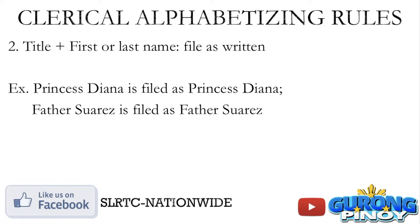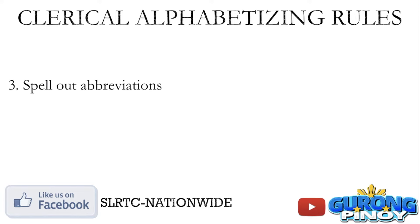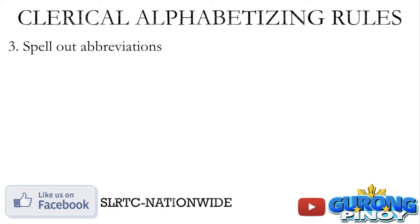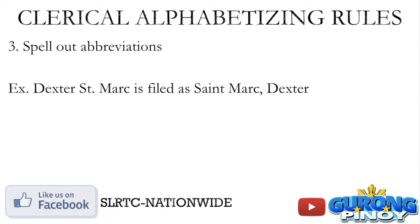Rule number three: spell out abbreviations. Pag meron pong abbreviations — yung mga dinaglat na mga terms or pangalan — you need to spell them out. For example, you have Dexter St. Mark. This should be filed as St. Mark, Dexter. Kung inyo pong napapansin, nauuna pa rin ang ating last name.